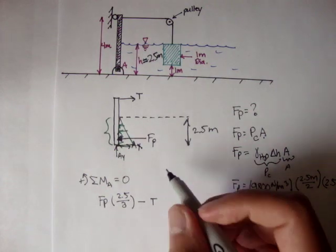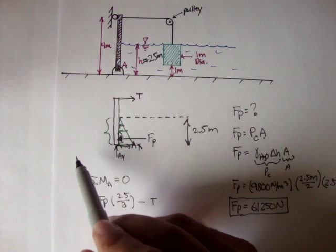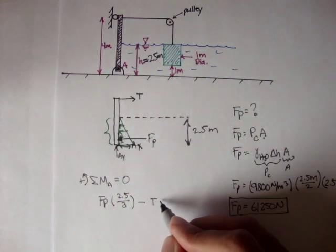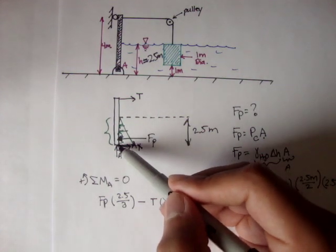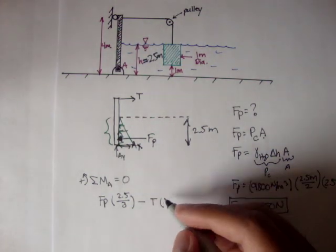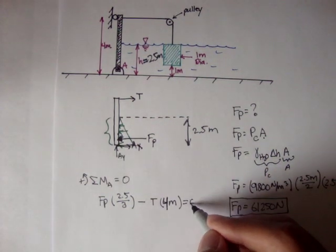Minus the tension, right? The tension is creating a clockwise moment, right? So the tension minus the tension times, well, the distance from A to where the tension is, is 4 meters, right? So 4 meters, 4 meters is equal to zero.